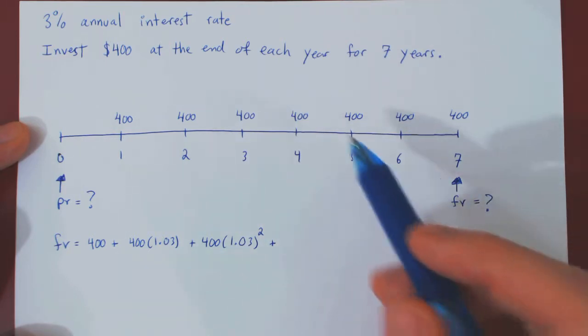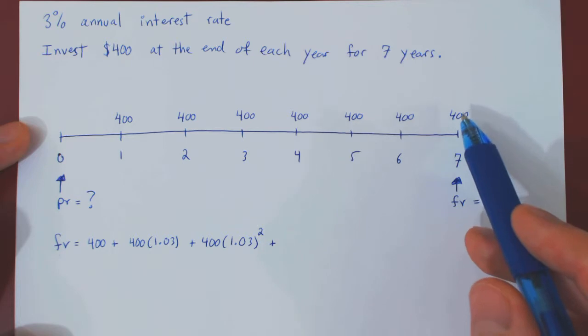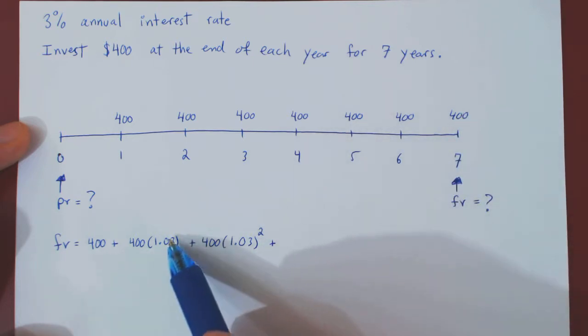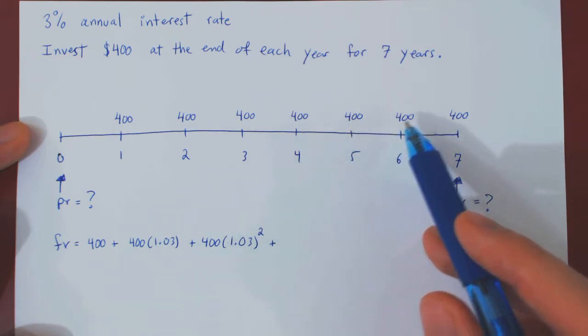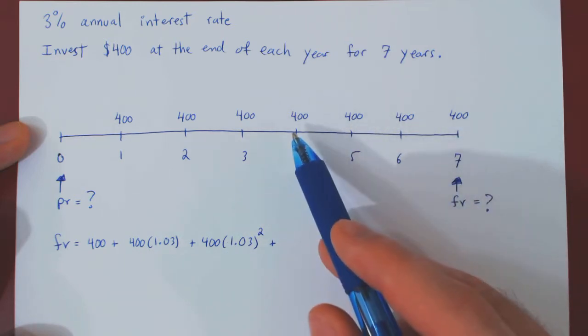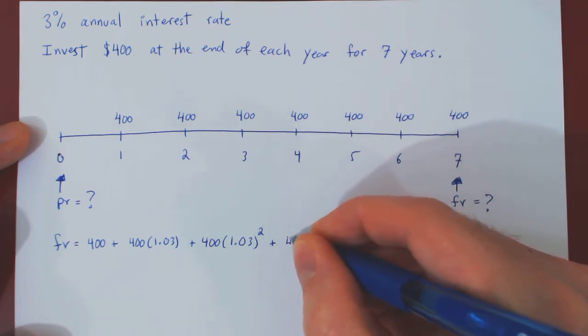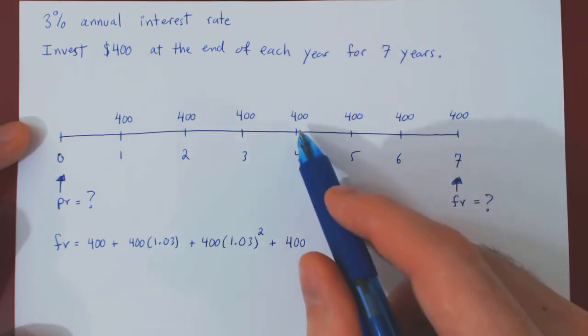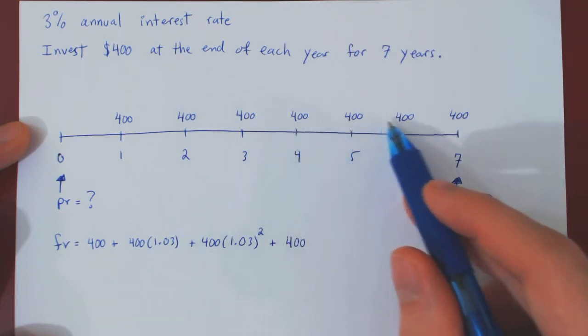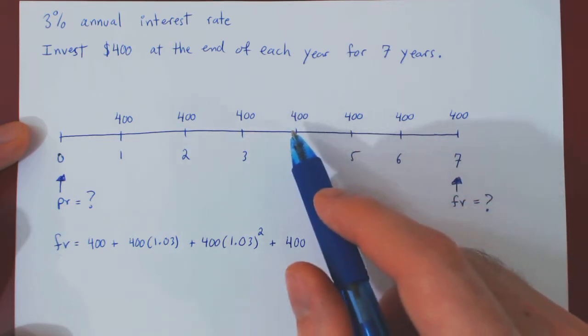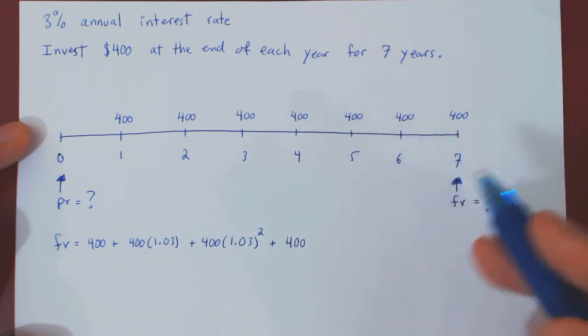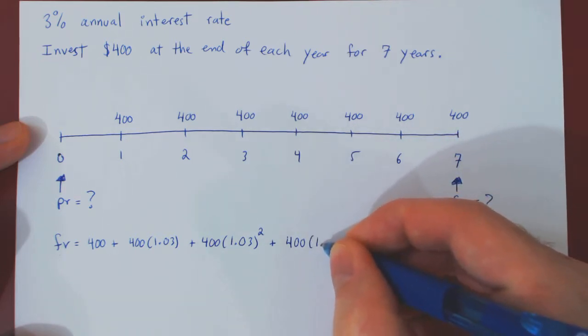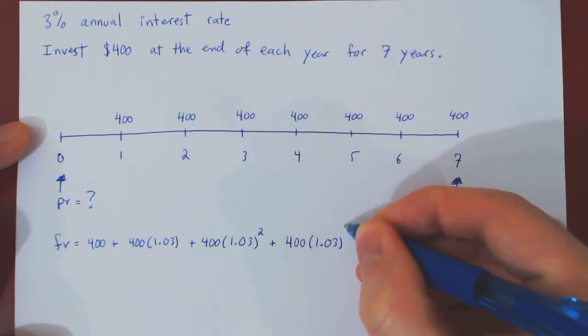Let's keep going. And you can probably see the pattern now. So we've brought back this one which was already there, this one forward by one unit of time, and this one forward by two units of time. But what about this one? Well, we have the $400. And then it's moved forward by one, two, three units of time. And for each unit of time, it is multiplied by 1.03. So this will be 1.03 times itself three times.